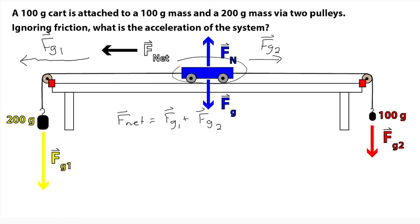Now I'm going to put in some algebra. In net force statements we always put in ma for the net force. The equation to calculate a force of gravity is mg, so I'll put in m1 for the mass of the first object and m2 for the mass of the second object.